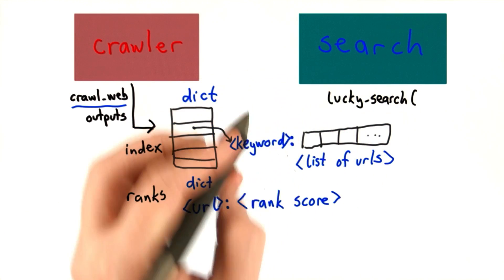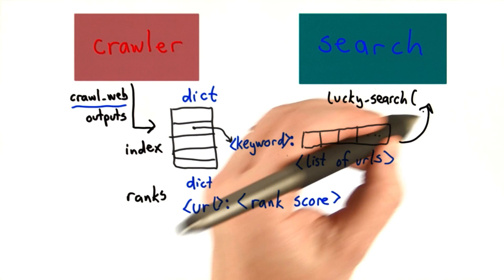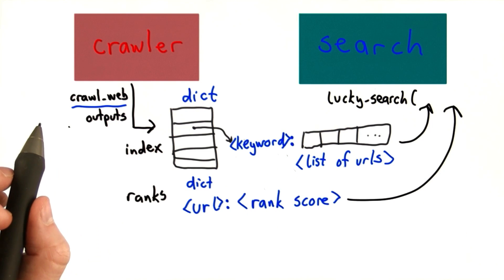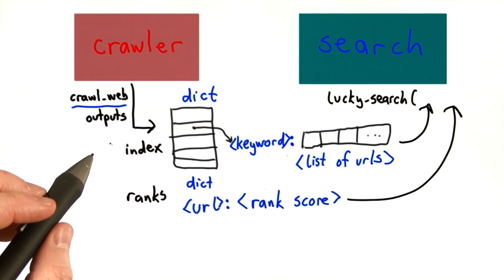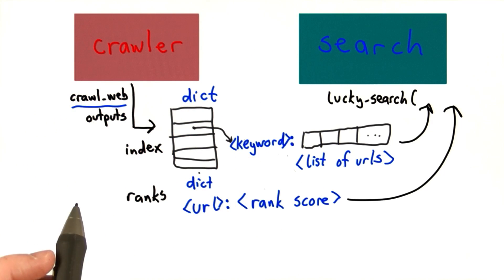In the search module, a procedure like lucky search depends on getting both of those things as inputs. So this is quite a complex dependency, and this is the kind of thing that makes it much harder to maintain code, much harder to understand code, and much harder to change the code.